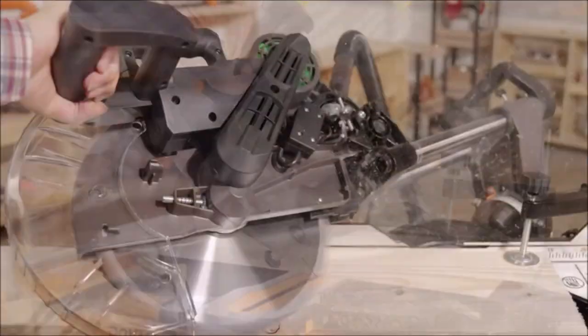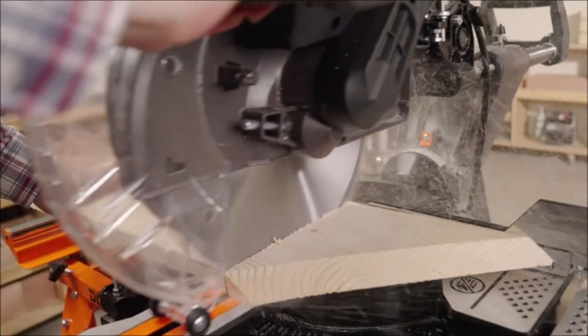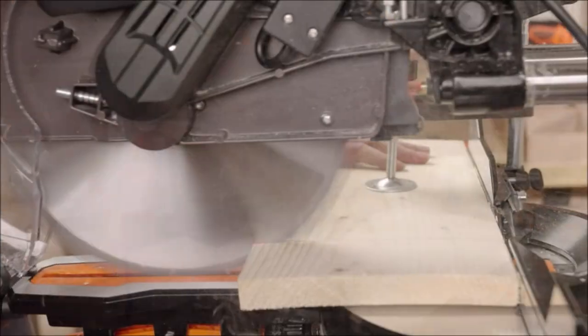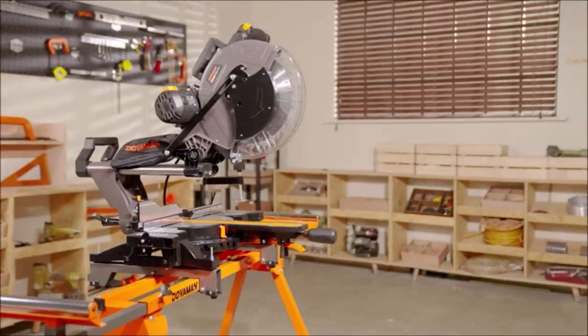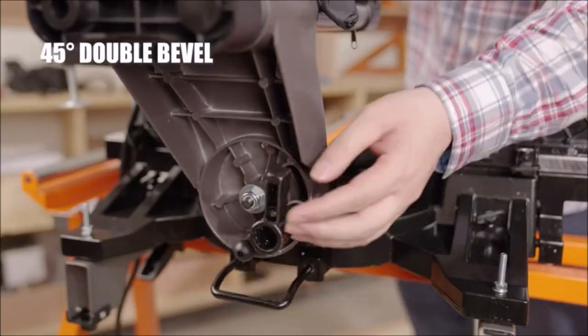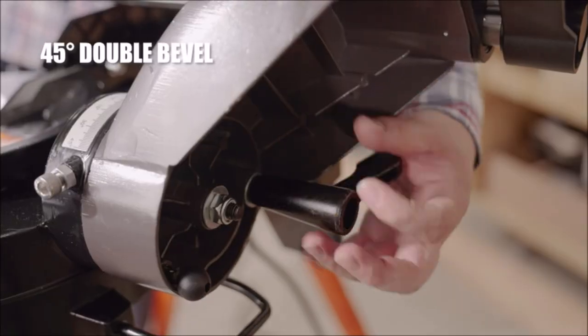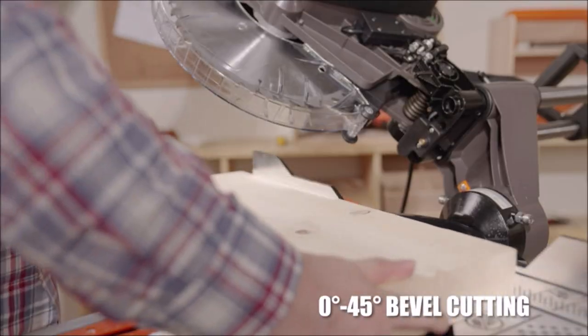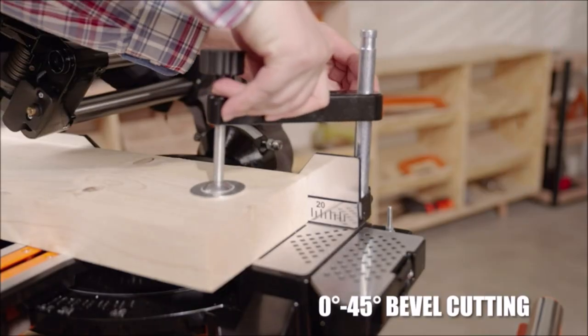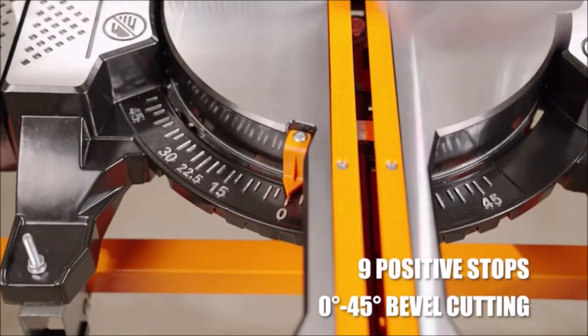The Doverman 12-inch Dual Bevel Compound Miter Saw delivers powerful performance with its robust 15 amp motor providing exceptional cutting power for a wide range of materials. Operating at a maximum speed of 3,800 RPM, it ensures efficient and precise cuts in woodworking projects.